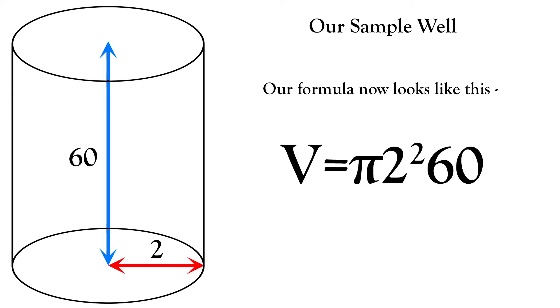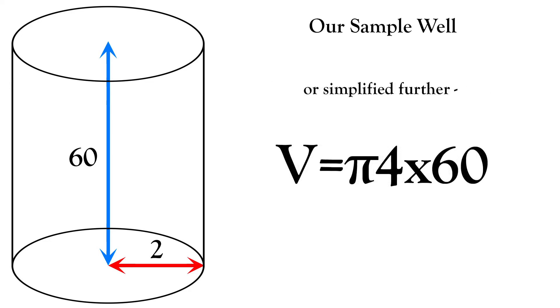So now our formula is actually taking on some values and it looks like this. Volume equals pi times 2 squared times 60. And we can simplify it even further and our formula is volume equals pi times 4 times 60.